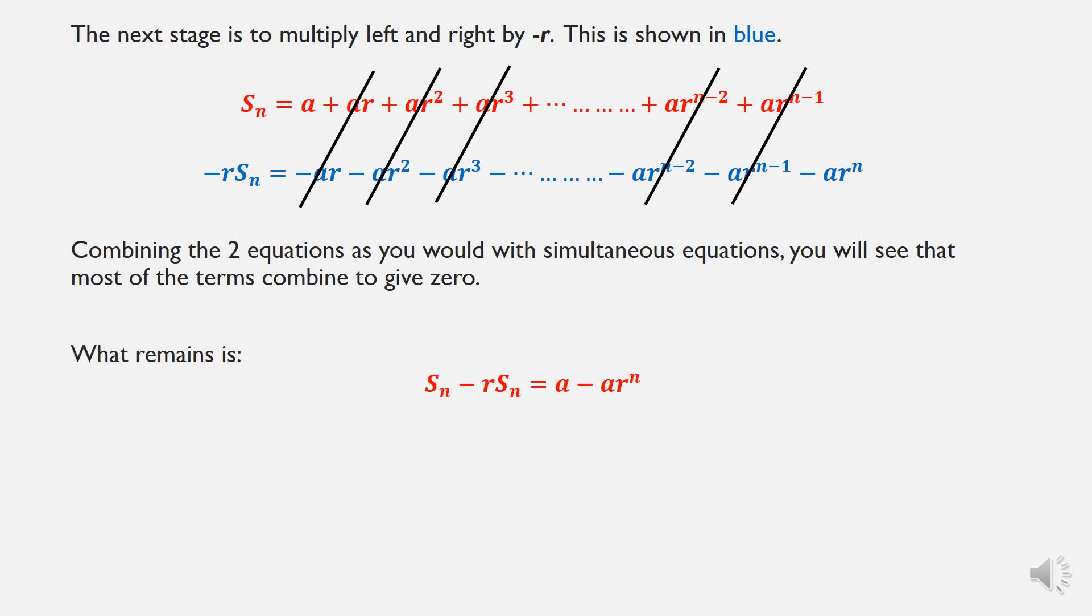What remains is, on the left, you have sn minus rsn equals, on the right, we have an a minus an ar to the power of n. So starting to look somewhat familiar.